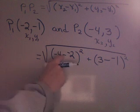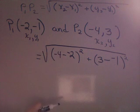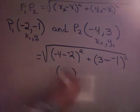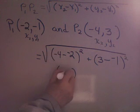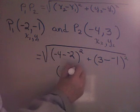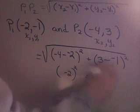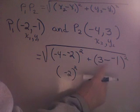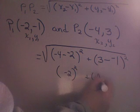Now, I hope you see double negatives here. That means I have a positive. So let's figure out this parenthesis here. Negative 4 plus 2 is negative 2 squared. Let's figure out this one. Negative 3 minus a negative 1 means 3 plus 1. That would be 4 squared.